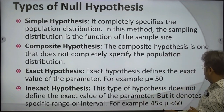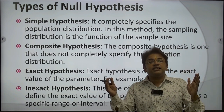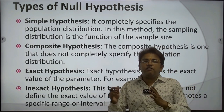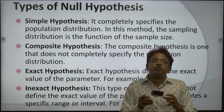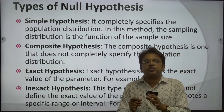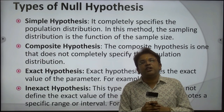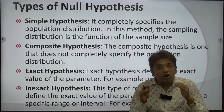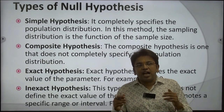An inexact hypothesis does not define the exact value of the parameters but denotes a specific range or interval — for example, mu is more than 50 or less than 50. All people aged 18 to 45 will be considered, so those more than 18 years and less than 60 years are included in the sample. The hypothesis is not specific or exact, therefore it is called an inexact hypothesis.